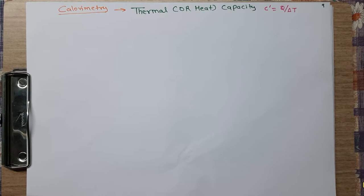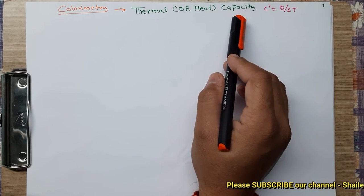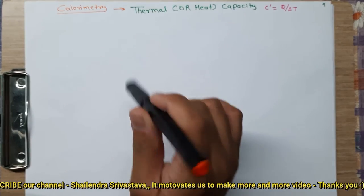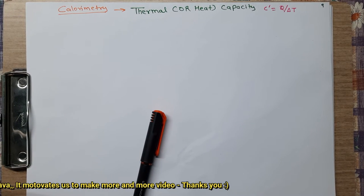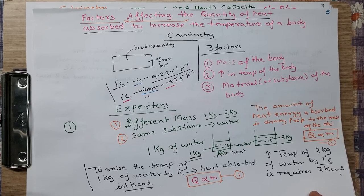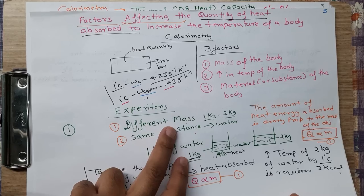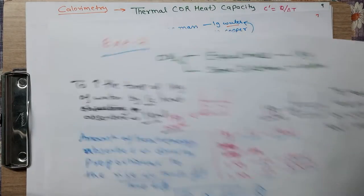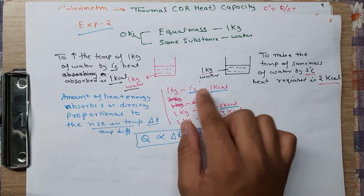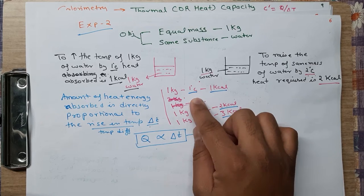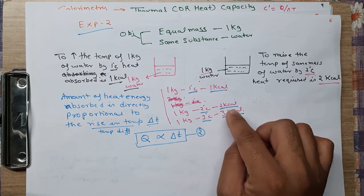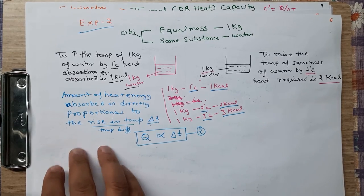The next topic is thermal or heat capacity as part of the chapter on calorimetry. In our everyday experience, we find that different bodies require different amounts of heat energy for equal rises in temperature. For example, in experiment number 2, to raise the temperature of 1 kg of water by 1 degree Celsius requires 1 kilocalorie, and by 2 degrees Celsius requires 2 kilocalories.